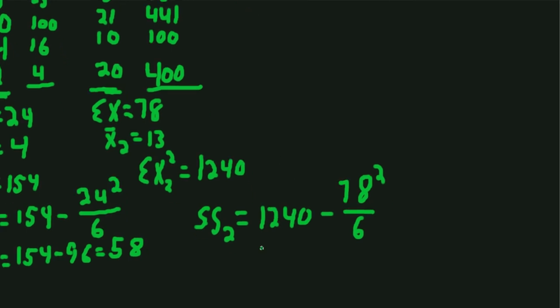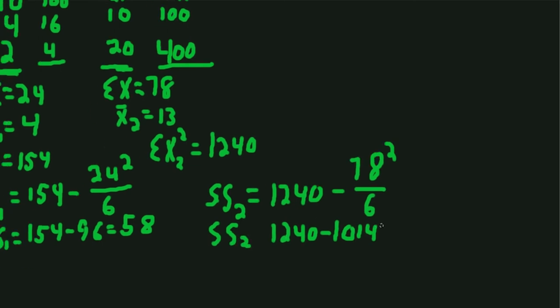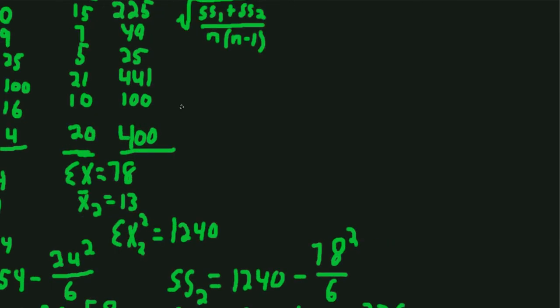So 1,014, we get sum of squares for group 2, which is 226. So we have everything we need to plug into the equation now.